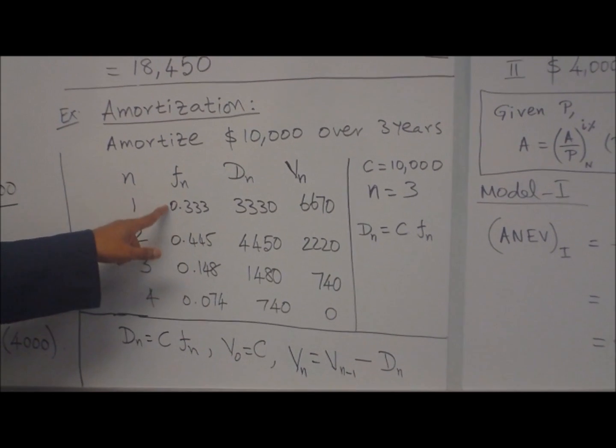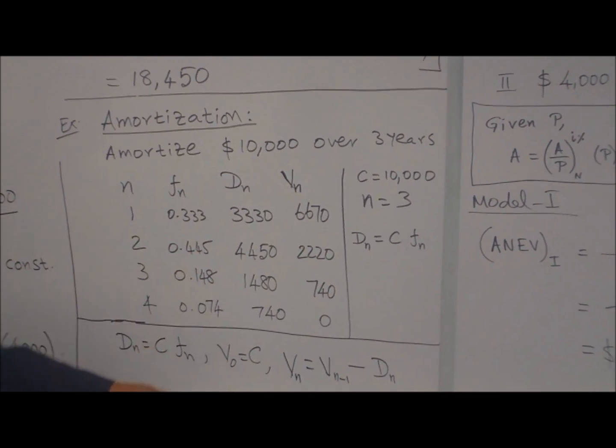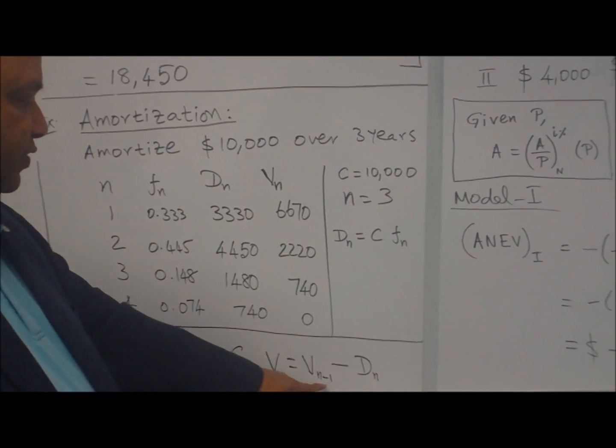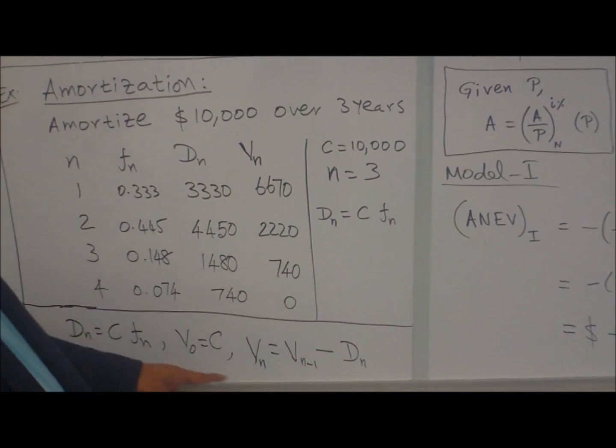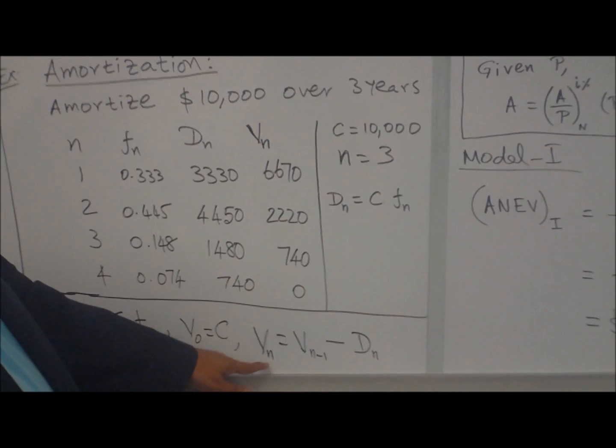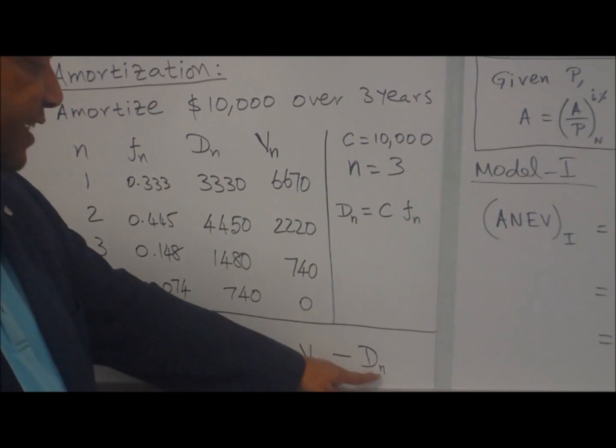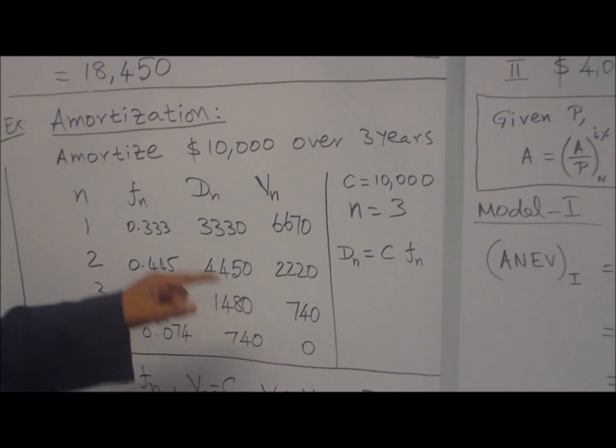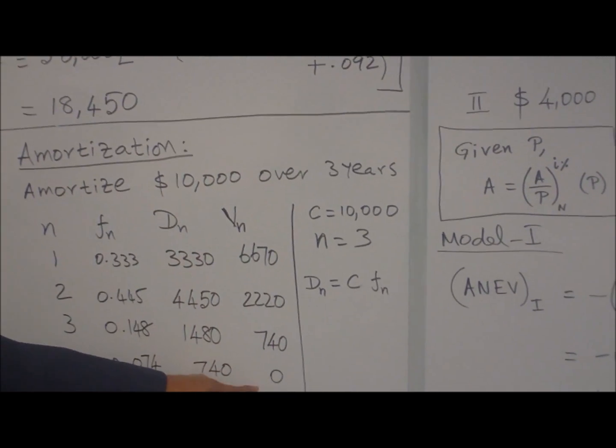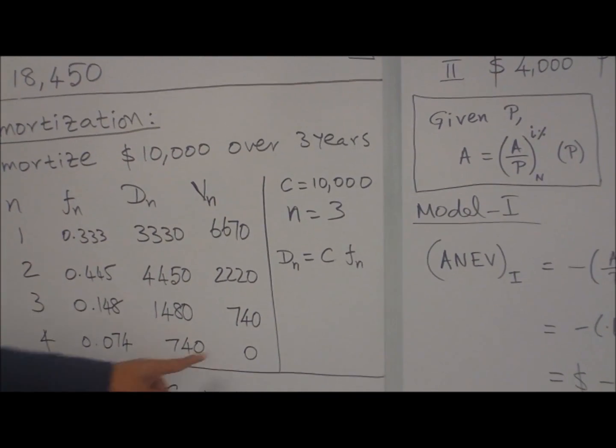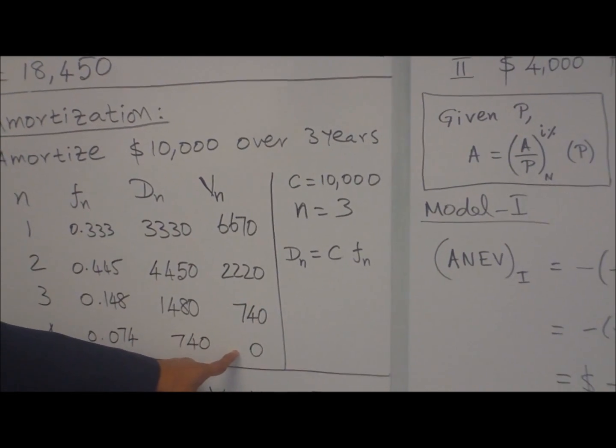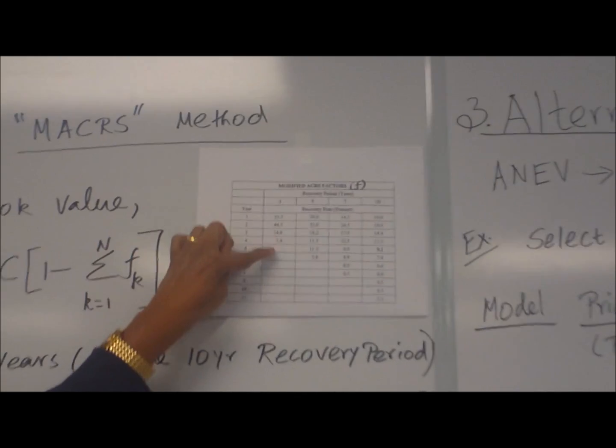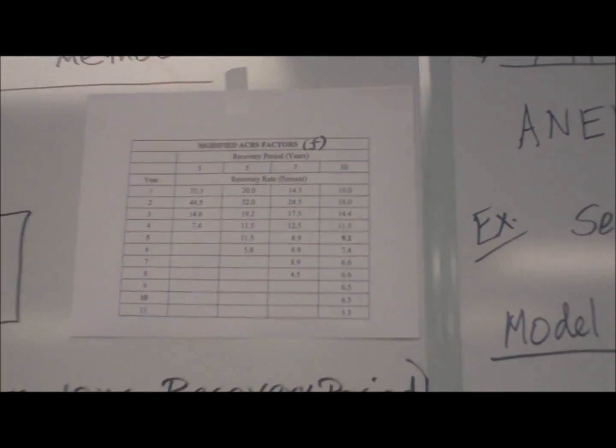Then to find V_n, you use this formula: V_n equals V_(n-1) minus D_n. For example, V_1 equals V_0 minus D_1. What is V_0? V_0 is C. Use that. Accordingly, you can calculate the column V_n. Now you can see that at the end of the fourth year it reduced to zero. So the N recovery period will reduce to zero for N plus 1 year.